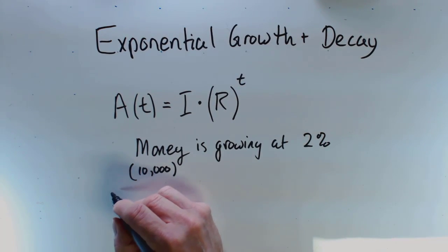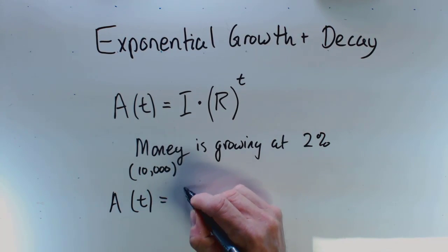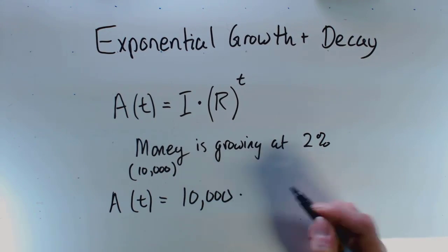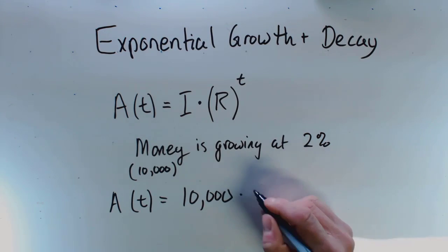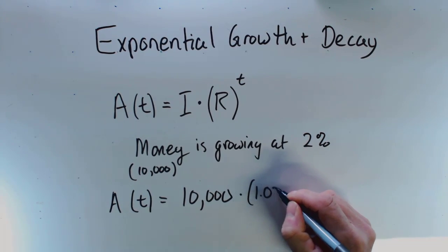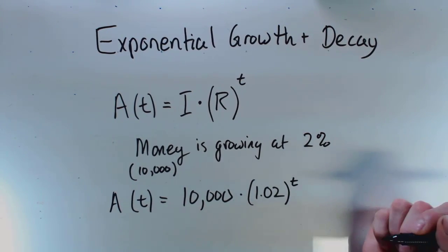Well, the amount of money that I have at time t is going to be equal to 10,000 times the growth rate. When it's 2%, the growth rate is 1.02, and this is going to be to the exponent t.